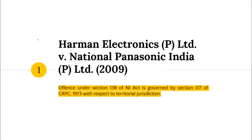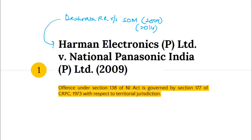To understand this case, you must know one case very well, and that is Dashrat Rup Singh Rathore versus State of Maharashtra. This case was filed in 2009 and decided in 2014. This case is very important because whatever was held in Harman Electronics was upheld in this very case. And a very famous case, K. Bhaskaran, was overruled in Dashrat Rup Singh Rathore.